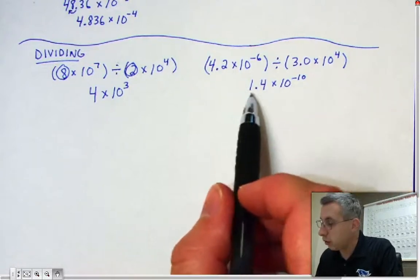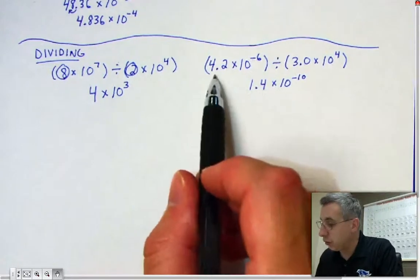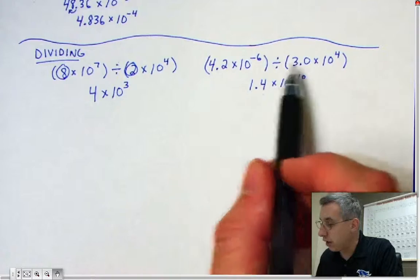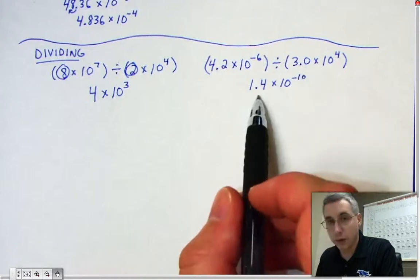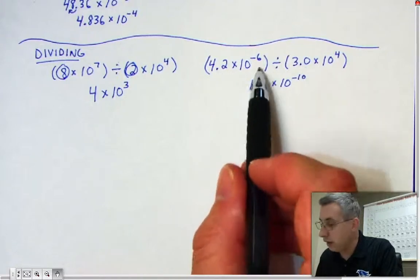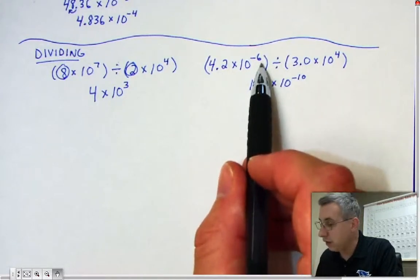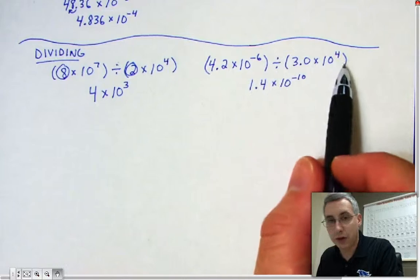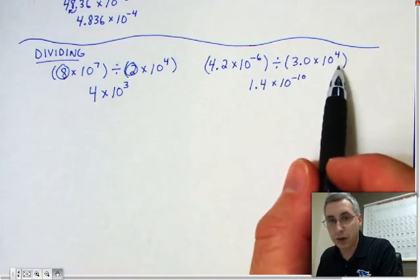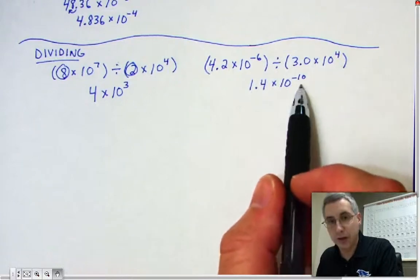The way you get 1.4 is you divide: 4.2 divided by 3 gives you 1.4. And then negative 6 minus positive 4 gives you negative 10.